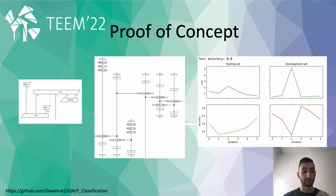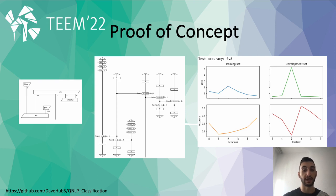First, as we can see, the input sentences are taken from the dataset and a string diagram is formed and converted into normal form. After that, the resulting diagram is transformed into an ansatz using the instantaneous quantum polynomial ansatz. Once done, the circuit is embedded in the model, and after the model is trained, we can observe that we obtain 80% accuracy on the validation dataset.